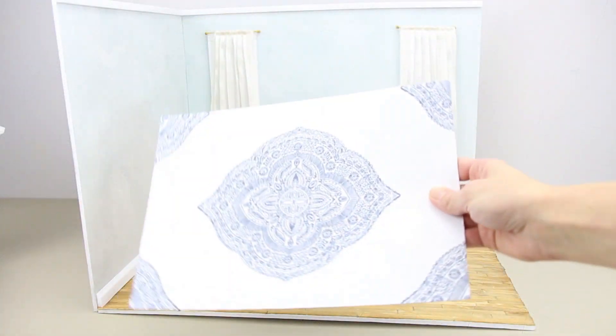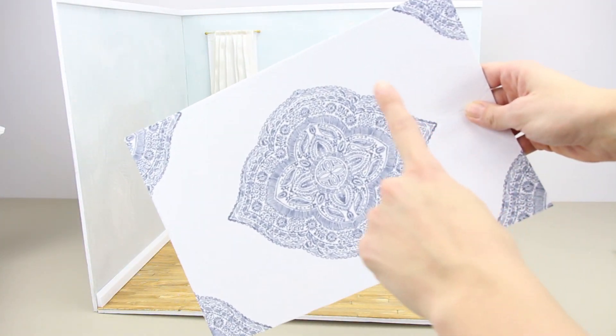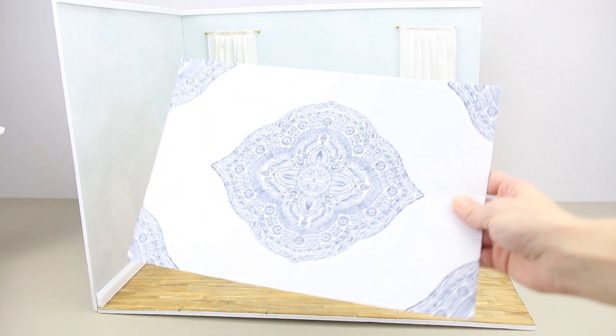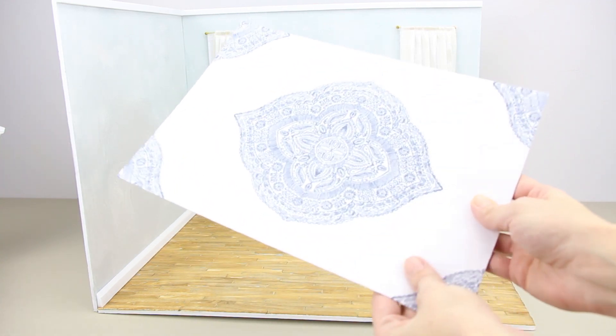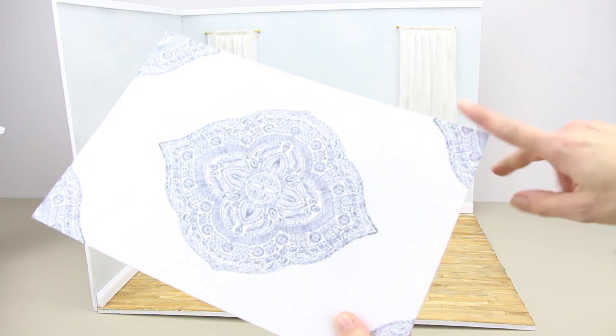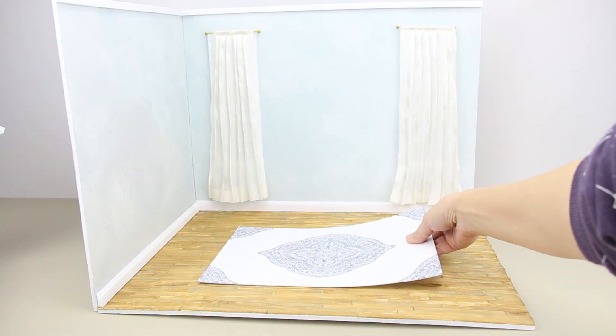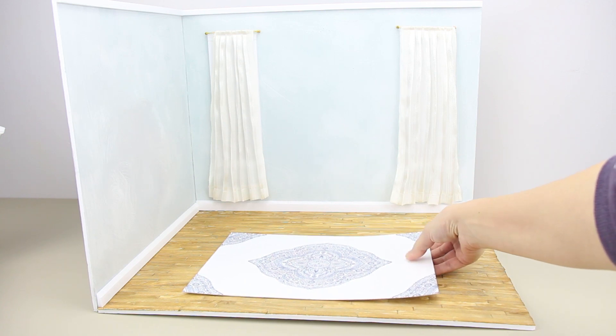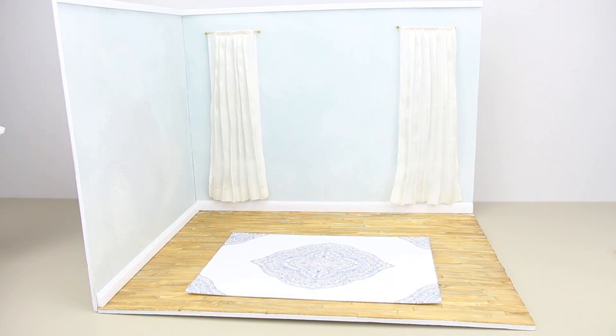To make a rug, I found a pillow sham at the thrift store for a dollar. With the pillow sham and a piece of sticky back felt from Hobby Lobby, I cut the fabric and stuck it on the felt. I trimmed the edges and frayed the edges.